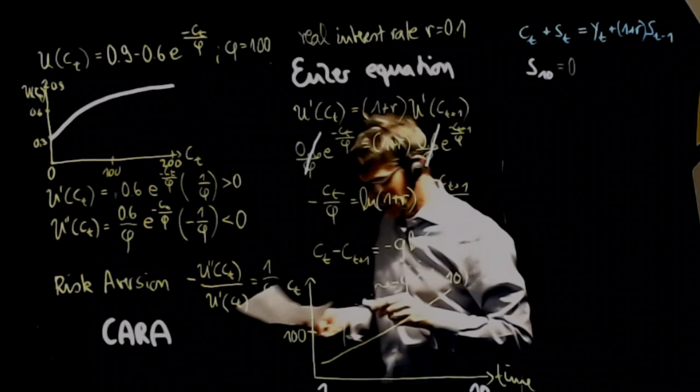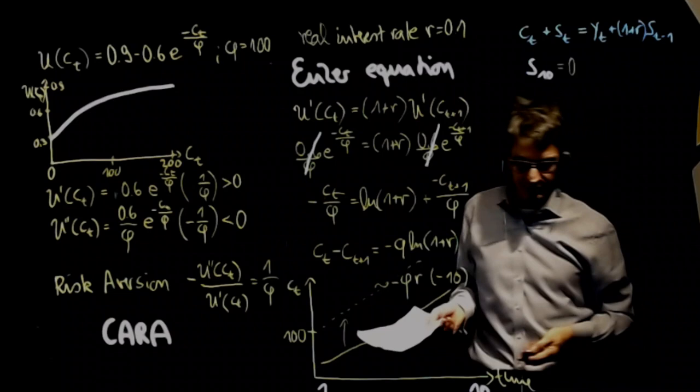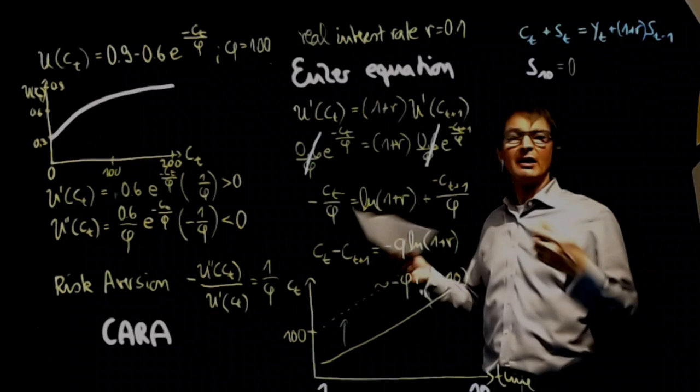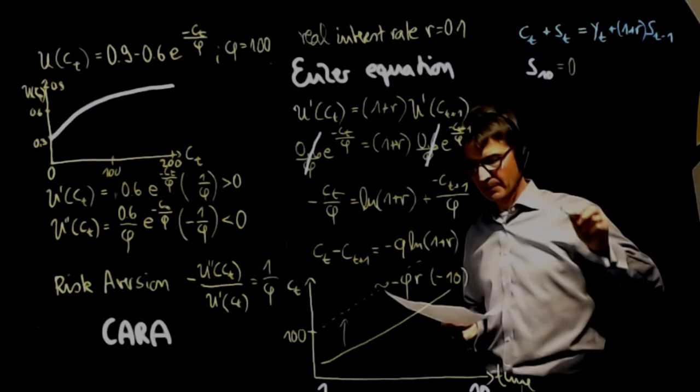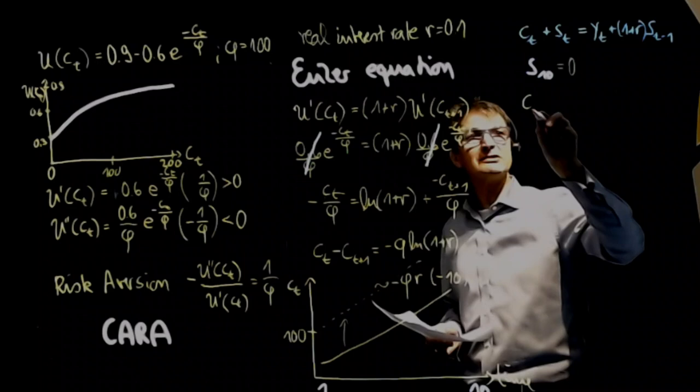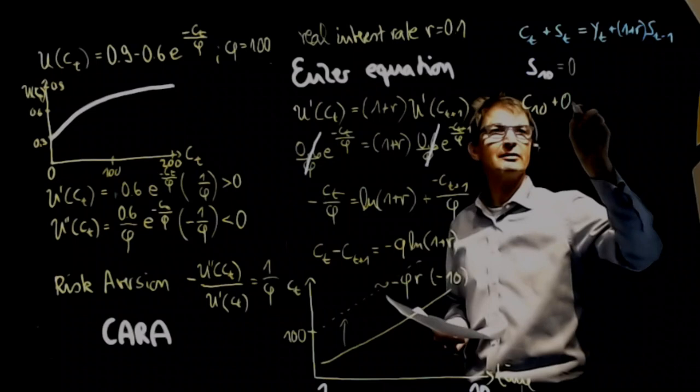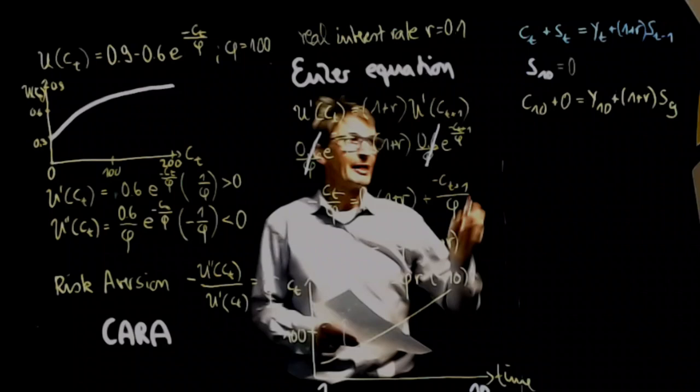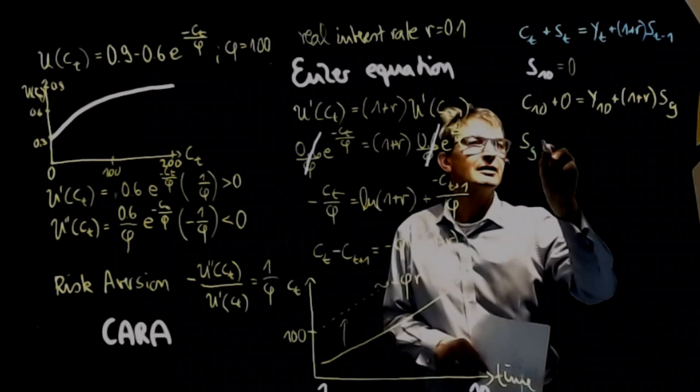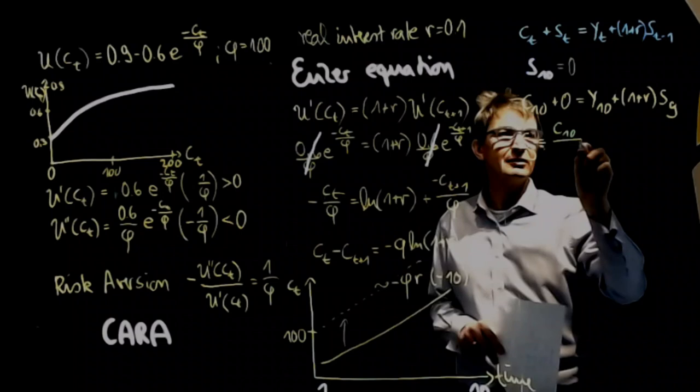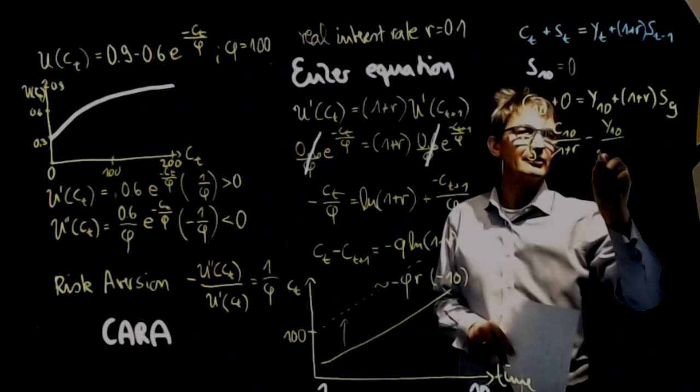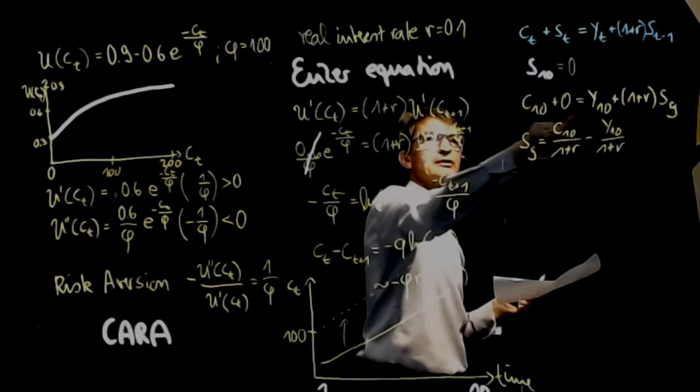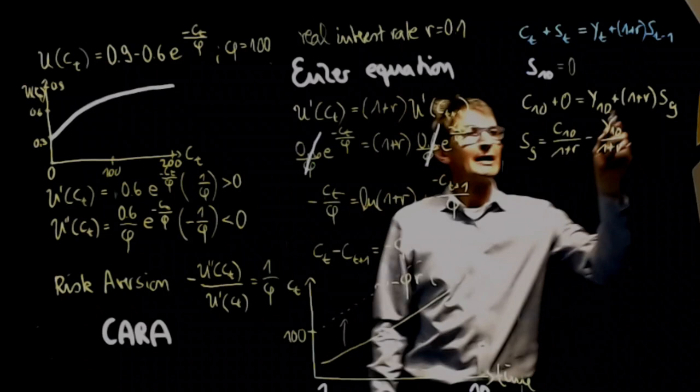we should have zero. Because, well, the life is ending. There is no sense of leaving anything behind. So our rational subject does not care about other people, about inheritance, for example. Now, knowing this, we can infer that C_10 plus zero, so we leave this out, must be equal to Y_10 plus 1 plus R times S_9. So we can infer that savings in round 9 must be equal to C_10 over 1 plus R minus Y_10 over 1 plus R. I hope you see this, that I just moved the Y_10 to the left-hand side and then divided by 1 plus R. Now, knowing this, we can look at the next restriction.